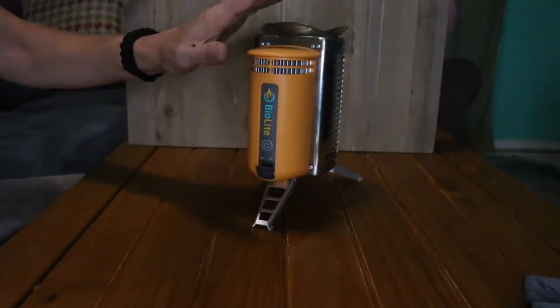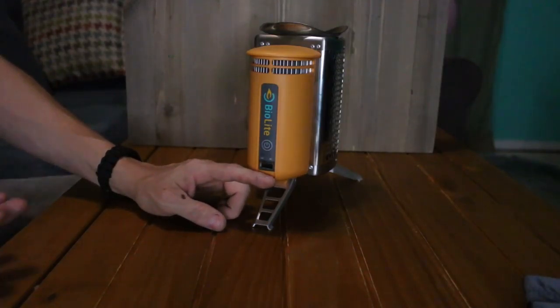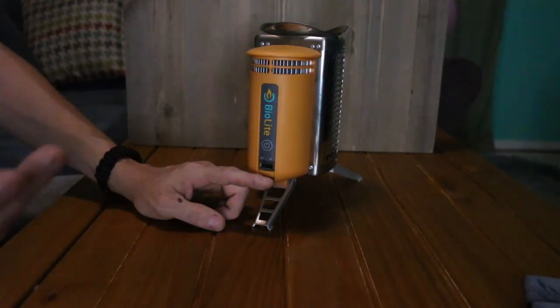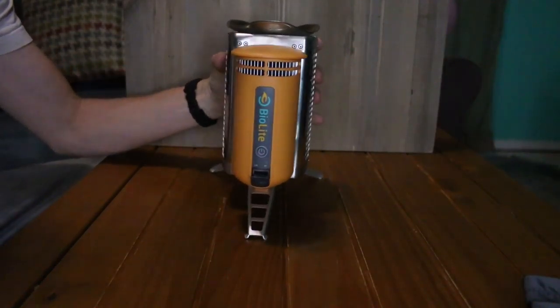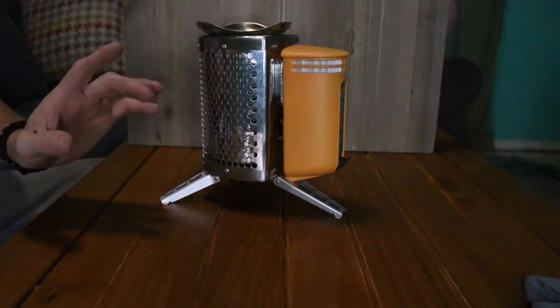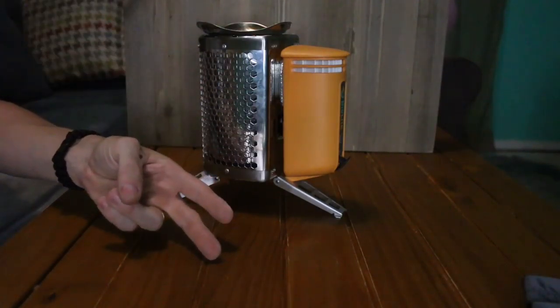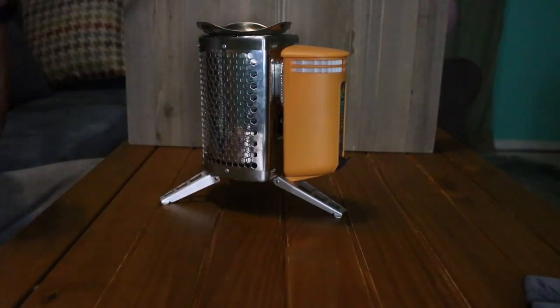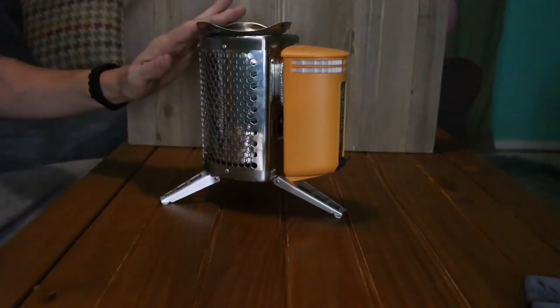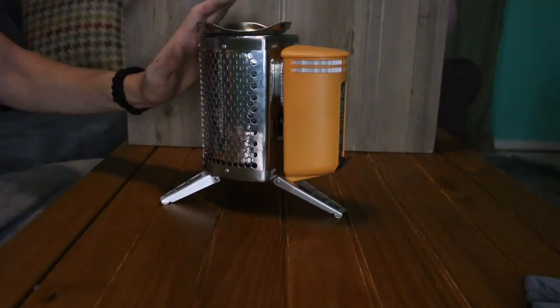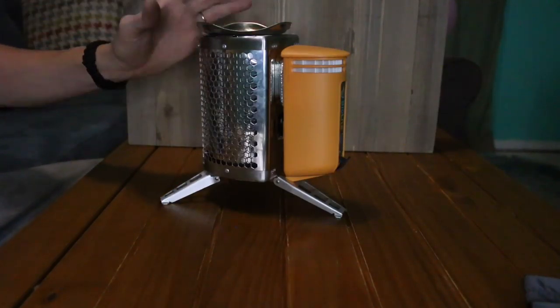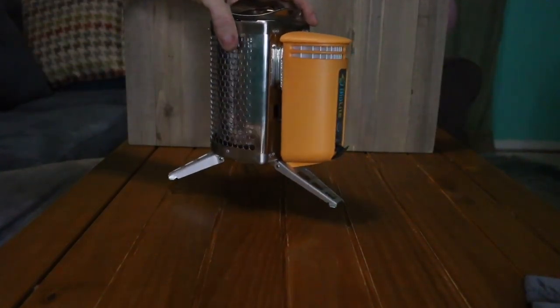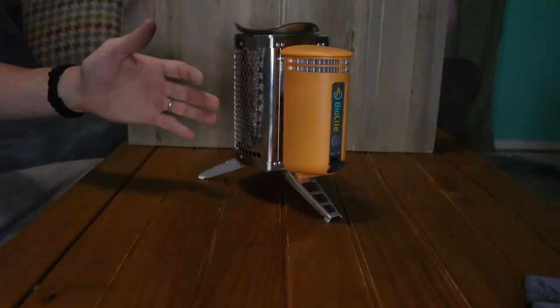So but on a 20 minute charge on your USB, you roughly get around 60 minutes worth of talk time on a phone. But that varies depending upon phone to phone. They also are saying that with this, and it also depends upon your altitude, your fire source, and the size pot that you have. But you can get a pot of water to boil in four and a half minutes. And that's because that tornado jet effect coming up out of the top, creating that intense heat.